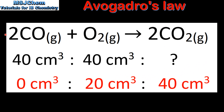Next we'll determine what volume of carbon dioxide can be made and what volume of oxygen remains. 40 cm³ of carbon monoxide, which is the limiting reactant, reacts with 20 cm³ of oxygen. This is because of the 2 to 1 ratio. So when we subtract 20 from 40 we are left with 20 cm³ of oxygen remaining.